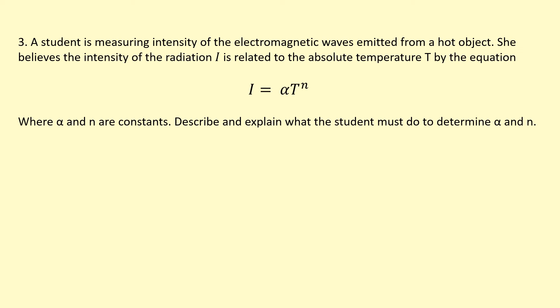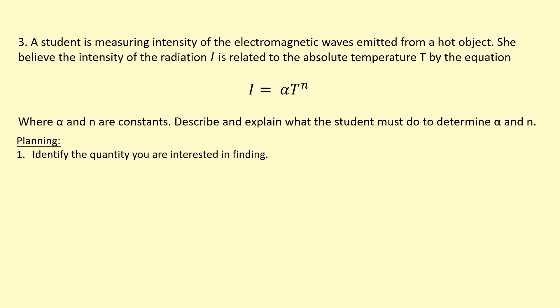In this example, a student is measuring the intensity of electromagnetic waves emitted from a hot object. She believes the intensity of the radiation I is related to the absolute temperature T by the equation I equals alpha T to the power of N, where alpha and N are constants. Describe and explain what the student must do to determine alpha and N. To plan this experiment, think about what you're interested in finding. You want to find alpha and N.